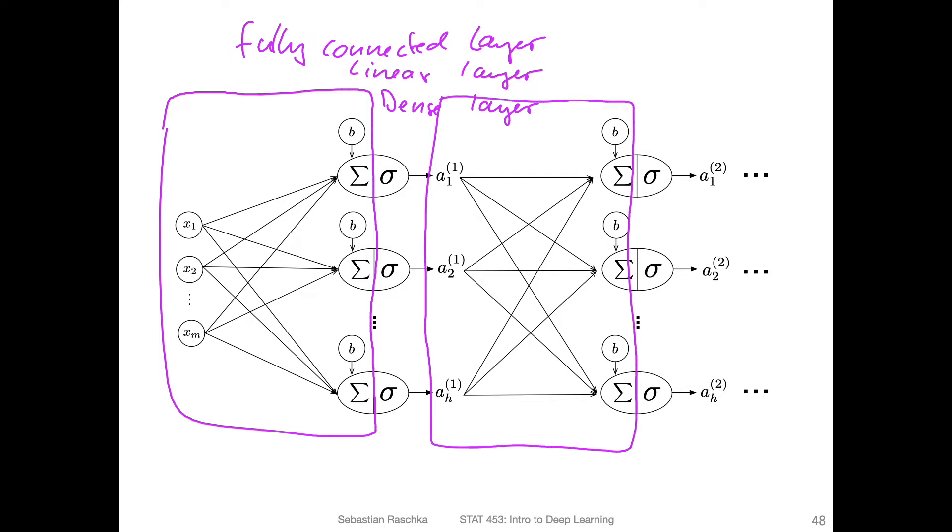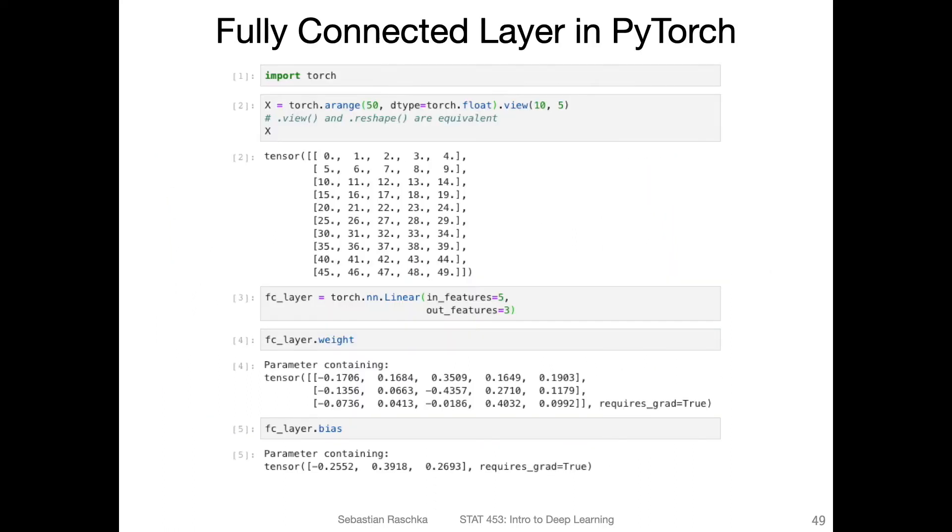Another dense layer or fully connected layer would be from here to here. A neural network really is a concatenation of multiple of these fully connected layers, which are then interspersed with these nonlinear activation functions. Multi-layer networks are a topic for a different lecture next week.